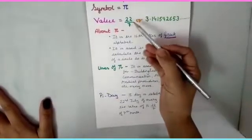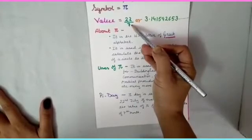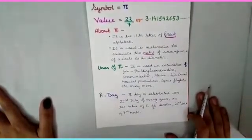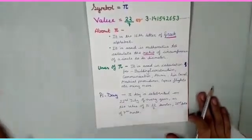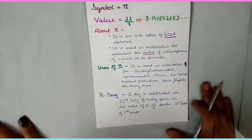Now here the numerator 22 denotes the date and the denominator 7 denotes the month, which is 7th month, which is July. So every year 22nd of July is celebrated as pi day.